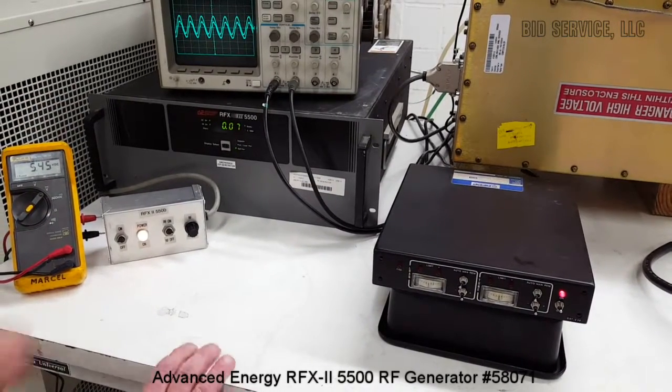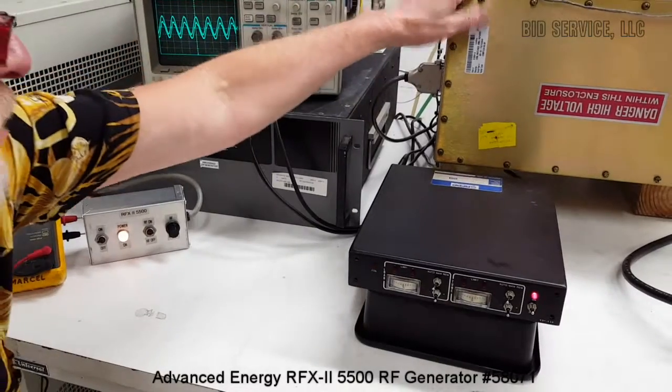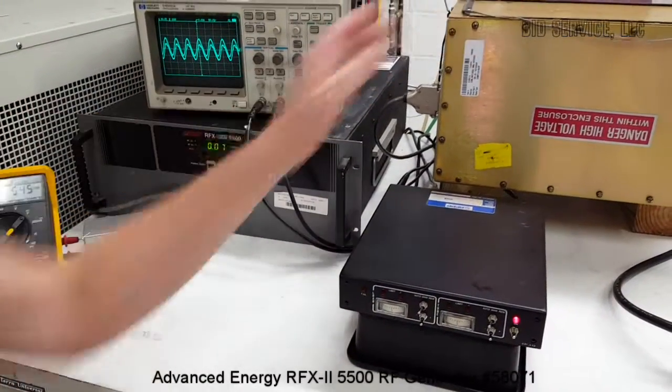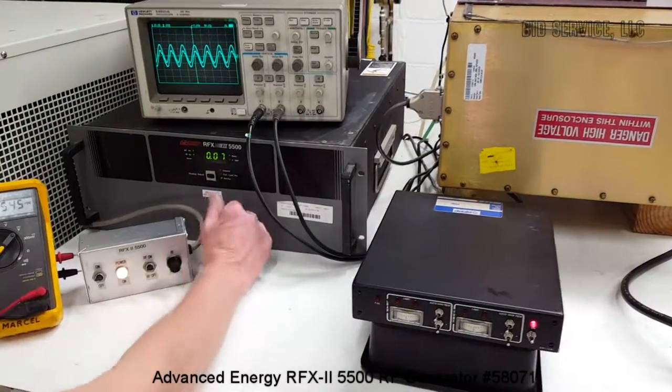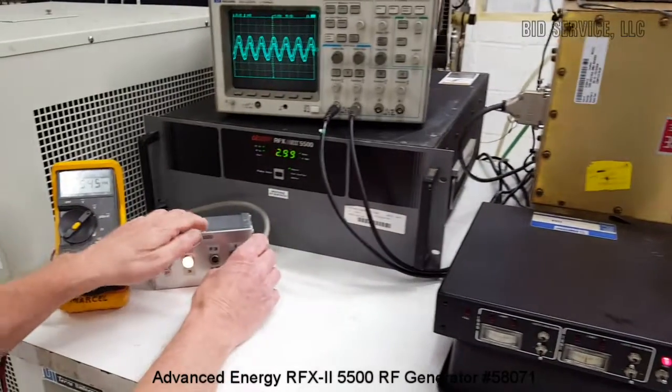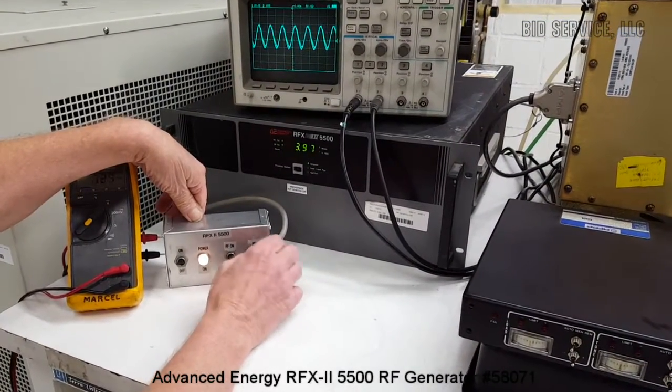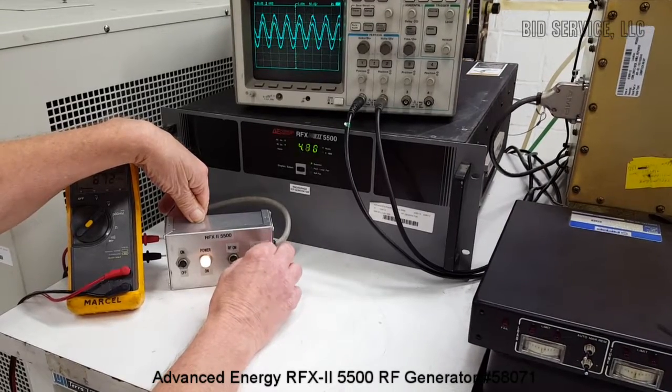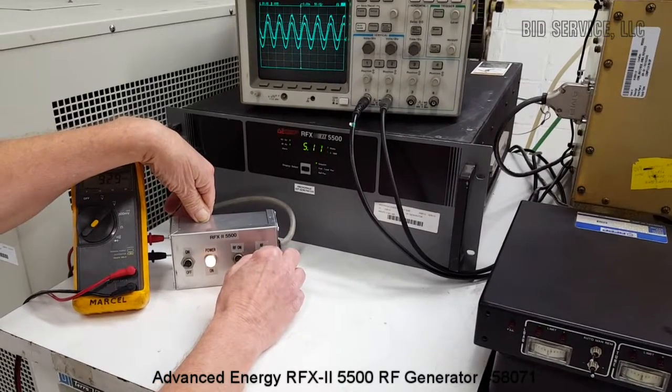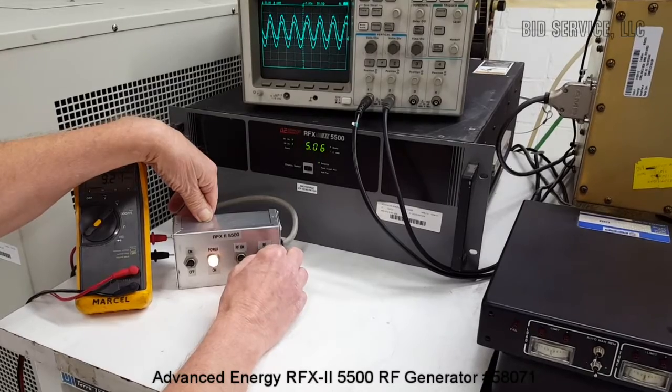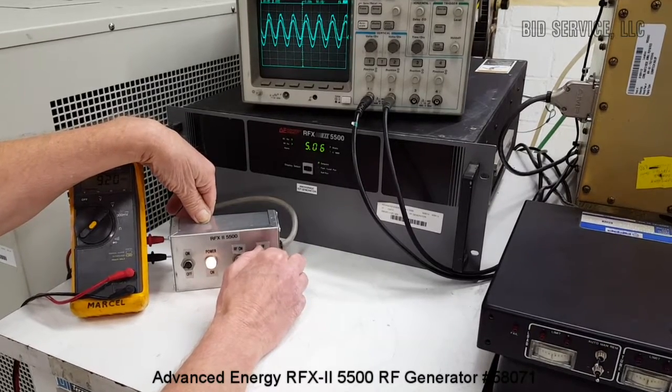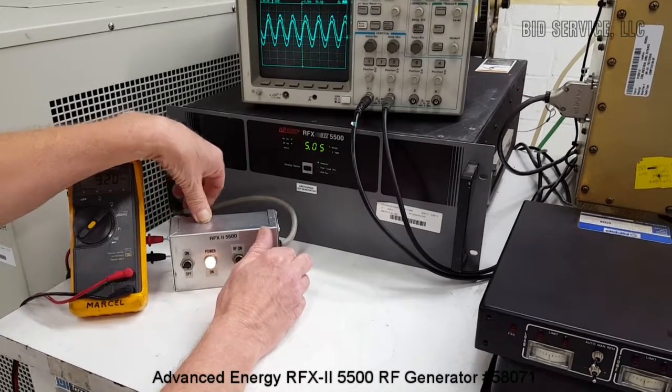Now I want to go up all the way to the maximum rated power for the matching unit, which is 5,000 watts. There's 5 kilowatts.